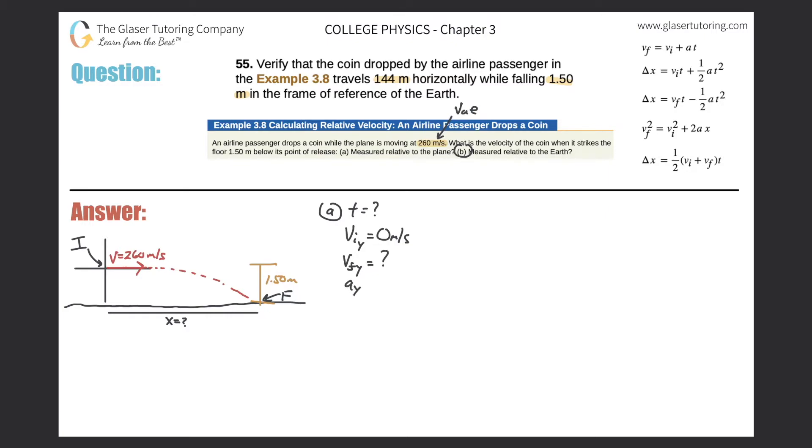What's the acceleration in the y direction for this problem? Well it's free fall, so it's negative 9.80 meters per second squared. And what's the displacement that the coin will fall in the y direction? Now careful, the sign is important. It's negative 1.50 meters. Start high and end low, always going to be negative.